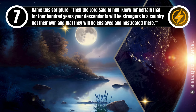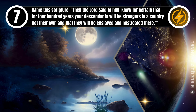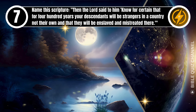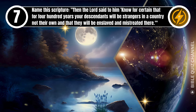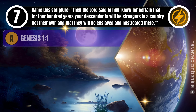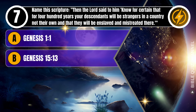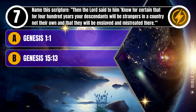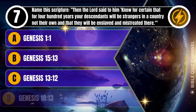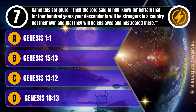Question 7. Name this scripture: 'Then the Lord said to him, Know for certain that for 400 years your descendants will be strangers in a country not their own, and that they will be enslaved and mistreated there.' A. Genesis, chapter 1, verse 1. B. Genesis, chapter 15, verse 13. C. Genesis, chapter 13, verse 12. D. Genesis, chapter 18, verse 13. You get 10 seconds.